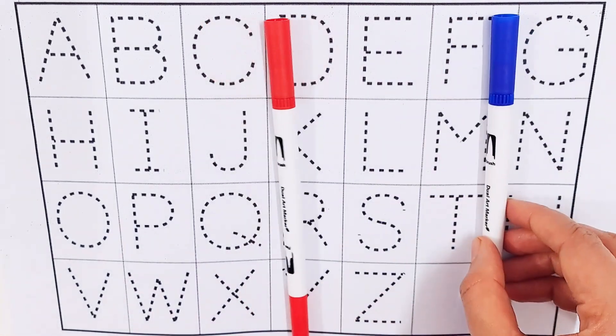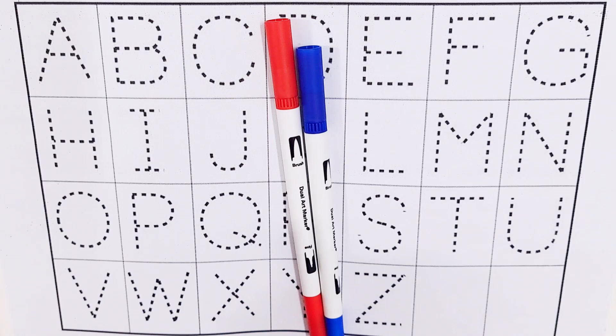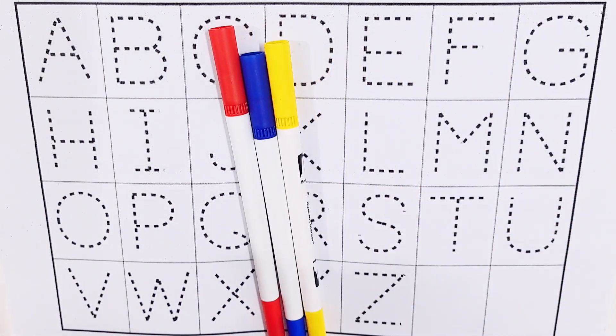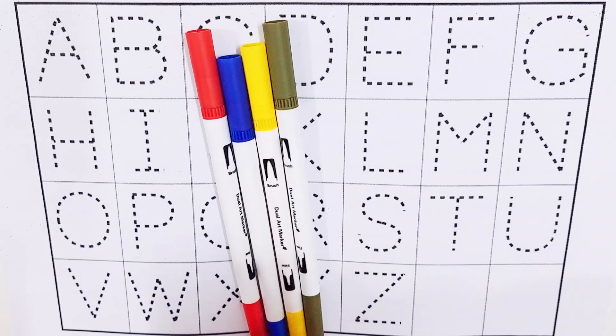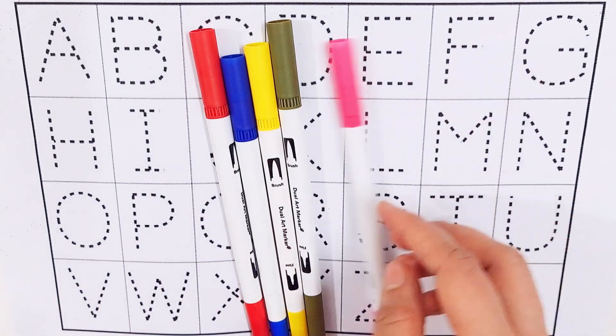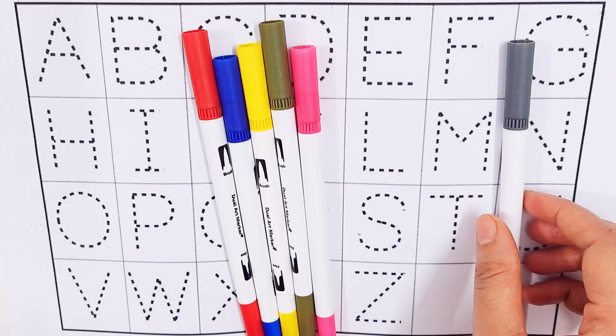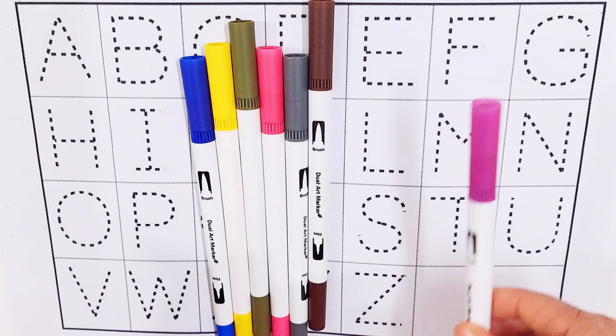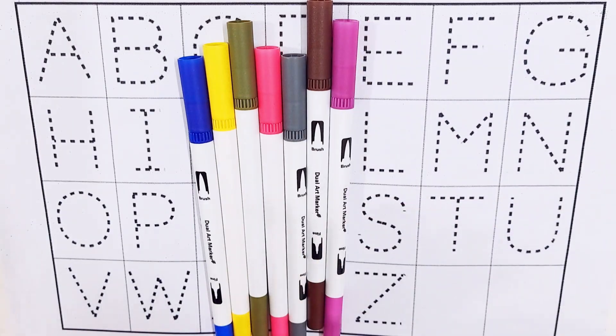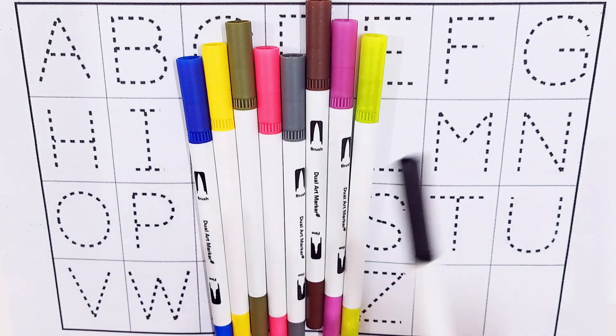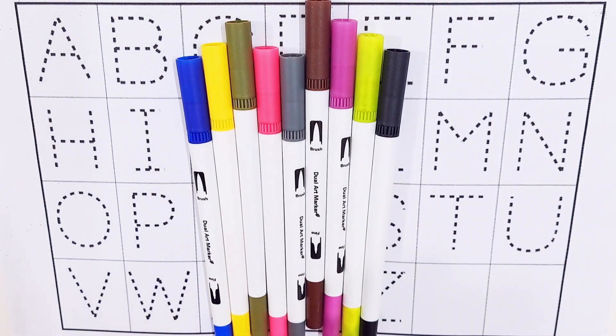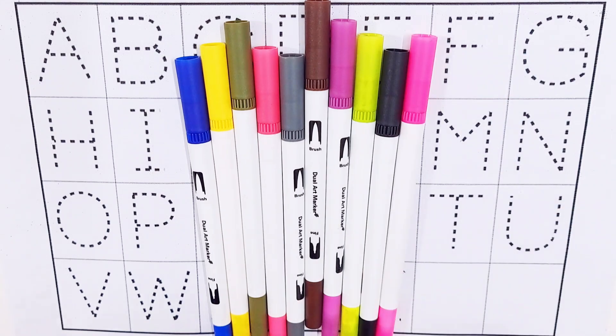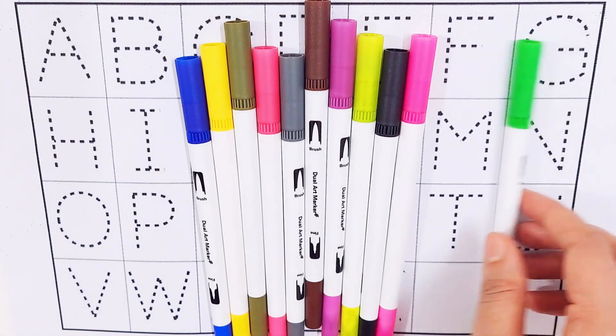Red color, dark blue color, yellow color, olive color, pink color, gray color, brown color, violet color, lime color, black color, purple color, green color.